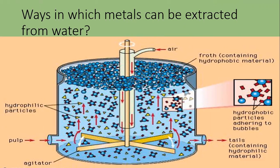Looking at methods used to extract these metals, firstly we'll look at the flotation method, which can be used to remove suspended solids, including metals. In this process, suspended solids are removed by adhering them with either air or gas. Various chemicals like alum and silica are used to successfully apply flotation separation.